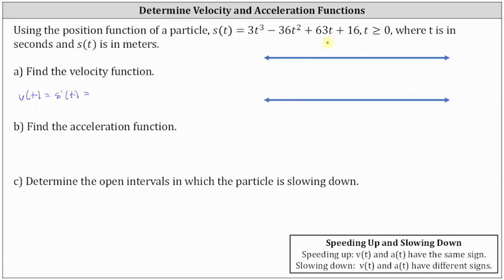The derivative of three t cubed with respect to t is equal to nine t squared — we multiply by three and then subtract one from the exponent. Minus the derivative of 36 t squared, which is 72 t — we multiply by two and subtract one from the exponent. Plus the derivative of 63 t, which is 63, and the derivative of 16 is zero. So the velocity function is equal to nine t squared minus 72 t plus 63.